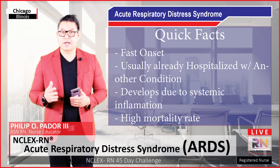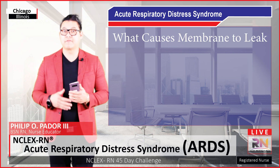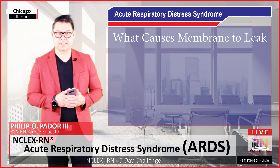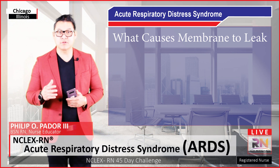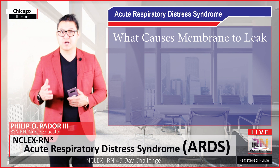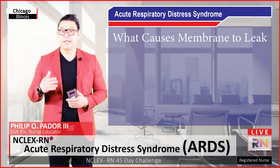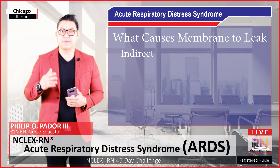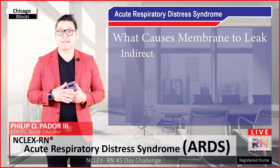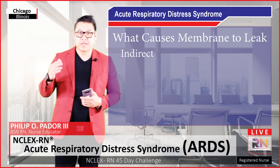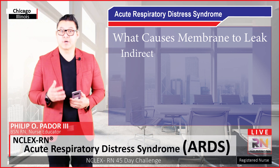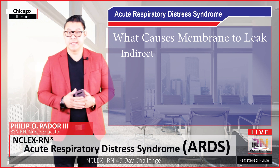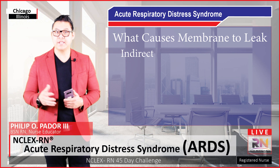Now let's talk about what causes the capillary membrane surrounding the alveolar sacs to leak, and then we'll talk about the pathophysiology and the phases of ARDS. Any event that leads to major systemic inflammation in the body can cause this condition, and this is usually from indirect sources — the sources are not in the lungs. It's somewhere else in the body, and what happens is that the immune system with the inflammatory cells is producing a lot of those, flowing through the blood. So the blood passing through the lungs can damage the capillary membrane, causing leakage of fluid.